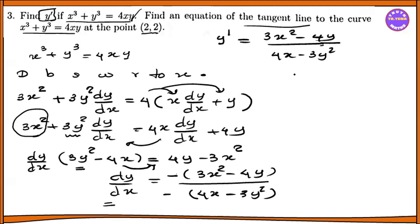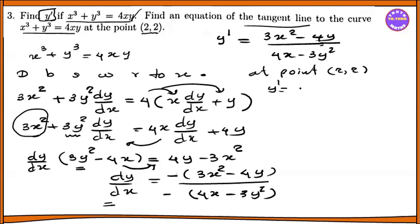So the first thing is we have to know that y prime is equal to y prime. The tangent line equation is m. We differentiate and go to point, so now we find y prime equal to: at the point (2, 2),